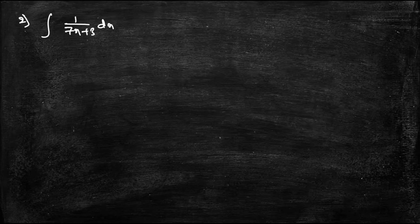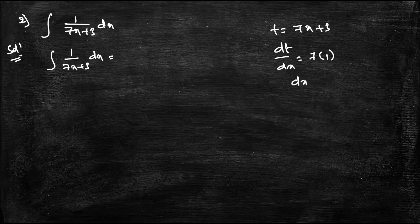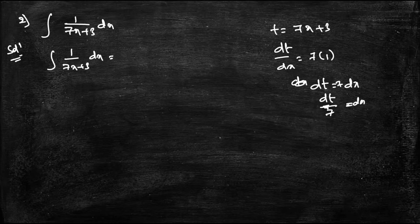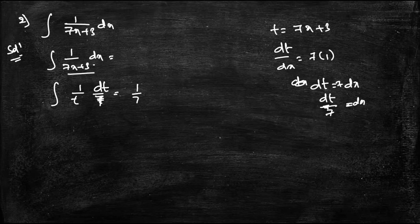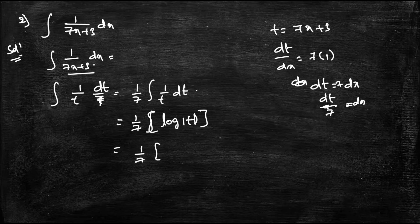Second question: integral of 1/(7x+3) dx. Take 7x+3 equal to t. Then dt/dx equals 7, so dt equals 7 dx, and dx equals dt/7. Substituting, the integral becomes (1/7) integral of (1/t) dt, which equals (1/7) log t. Substituting back t equals 7x+3, the answer is (1/7) log(7x+3).